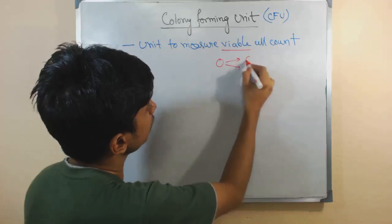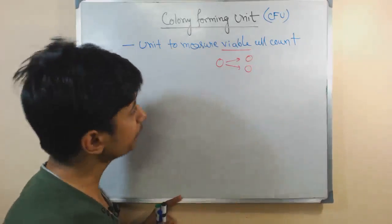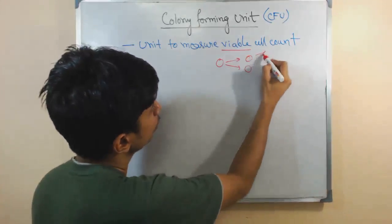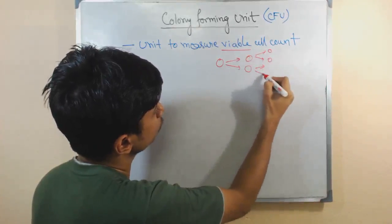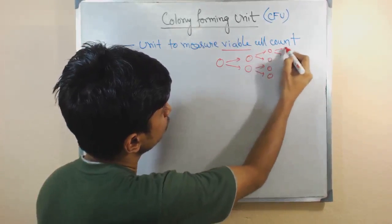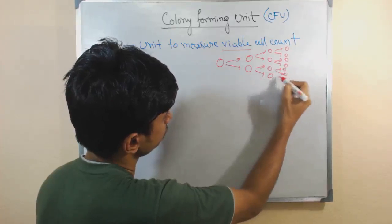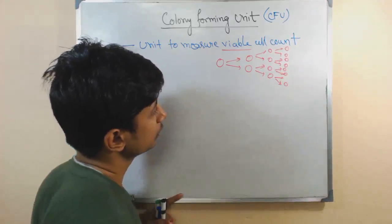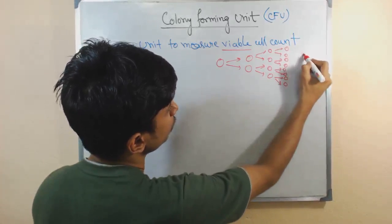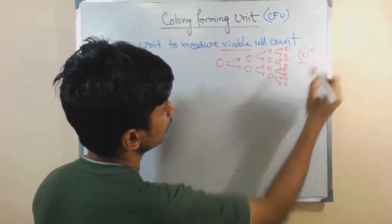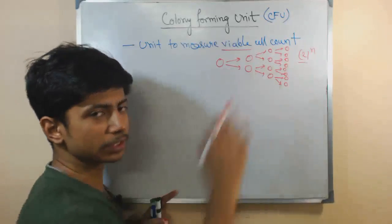Binary fission means one cell becomes two, then those become two to four, and those four to eight, so it is exponentially increasing in number. It is called 2 to the power n, where n is the number of divisions that take place.